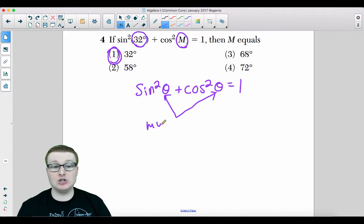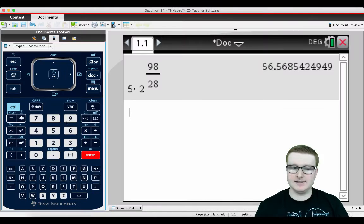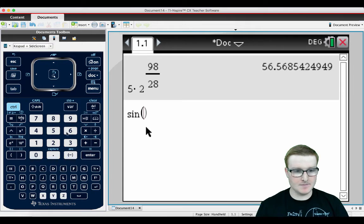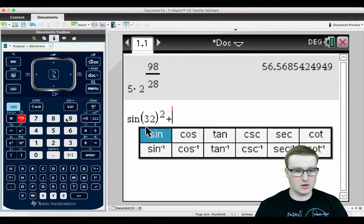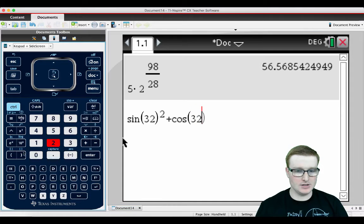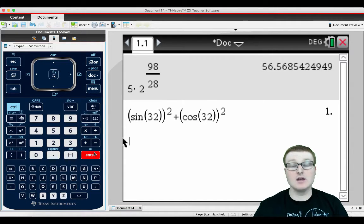You're thinking back to geometry when sine and cosine are co-functions, which are complementary. You got confused there. But these must be the same. If you want to confirm it, type it in. Sine of 32 quantity squared plus cosine of 32 quantity squared. That equals the number 1.